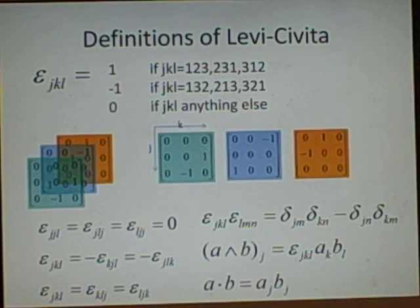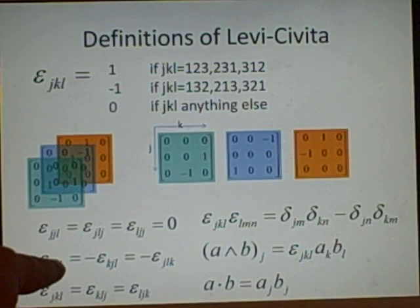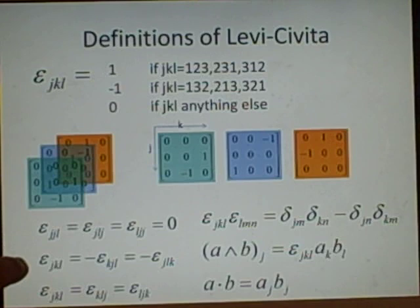If you want to swap any of the... If we wanted to swap j and k, for instance, then all we do is we multiply it by a minus. So epsilon jkl is minus epsilon kjl. And that's minus epsilon jlk.